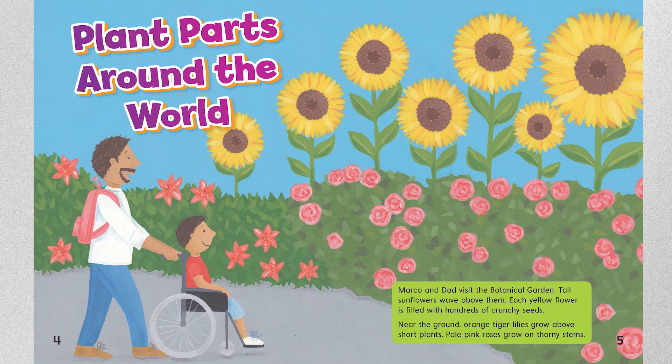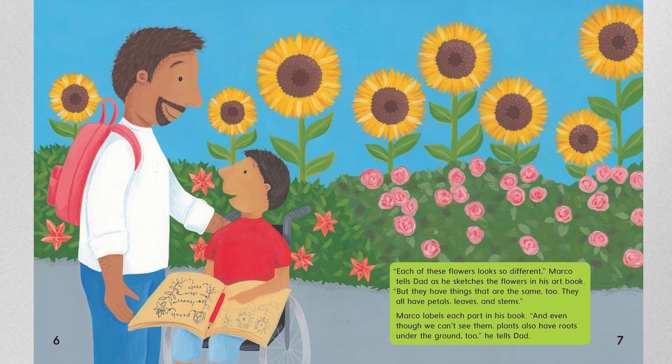Marco and Dad visit the botanical garden. Tall sunflowers wave above them. Each yellow flower is filled with hundreds of crunchy seeds. Near the ground, orange tiger lilies grow above short plants. Pale pink roses grow from thorny stems. "Each of these flowers look so different," Marco tells Dad as he sketches the flowers in his art book. "But they have things that are the same, too. They all have petals, leaves, and stems." Marco labels each part in his book. "And even though we can't see them, plants also have roots under the ground," he tells Dad.